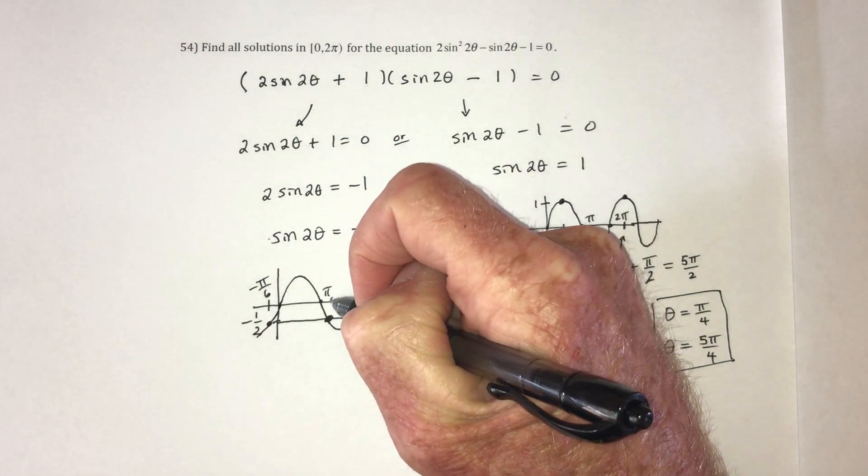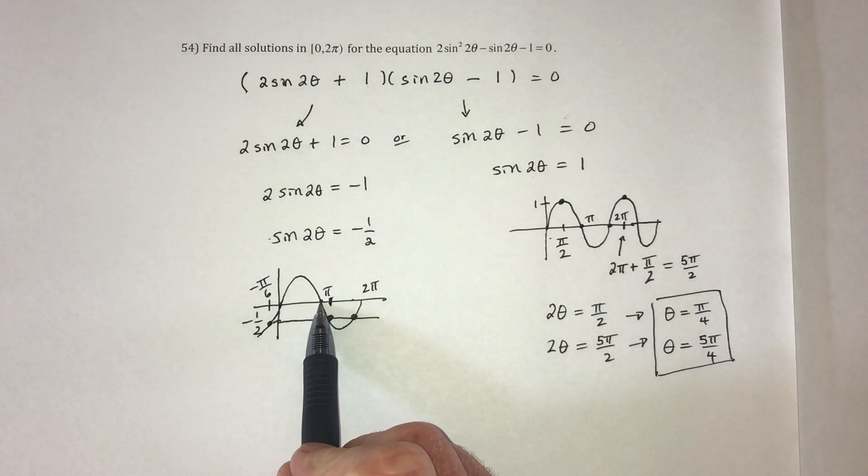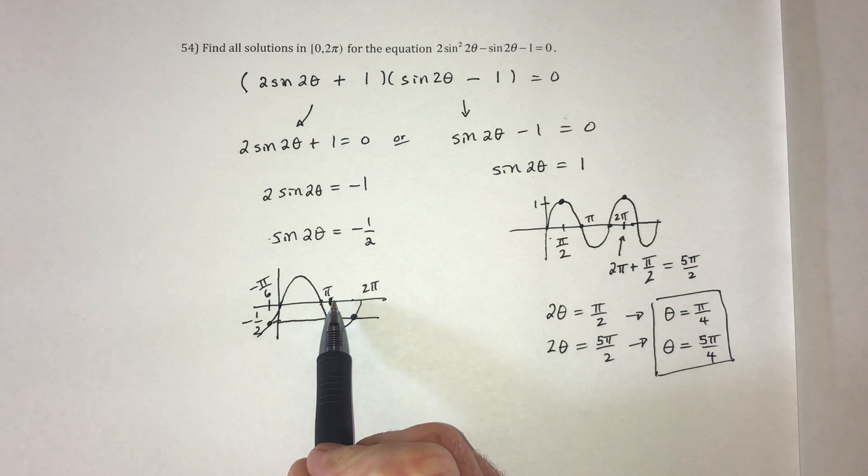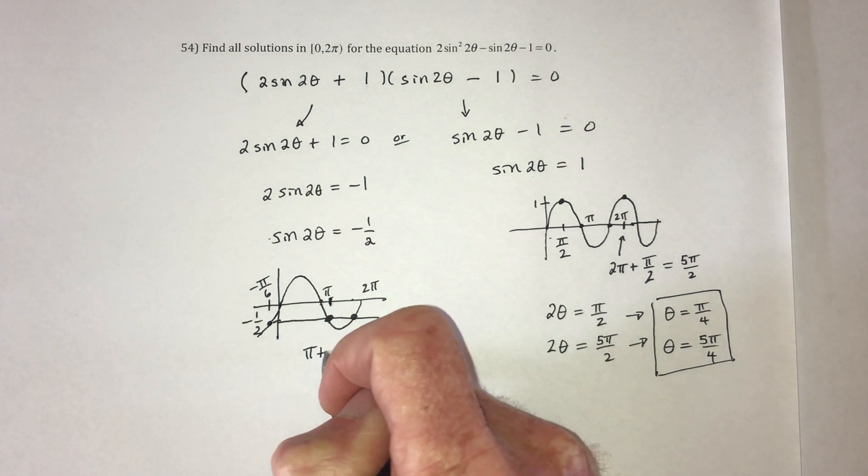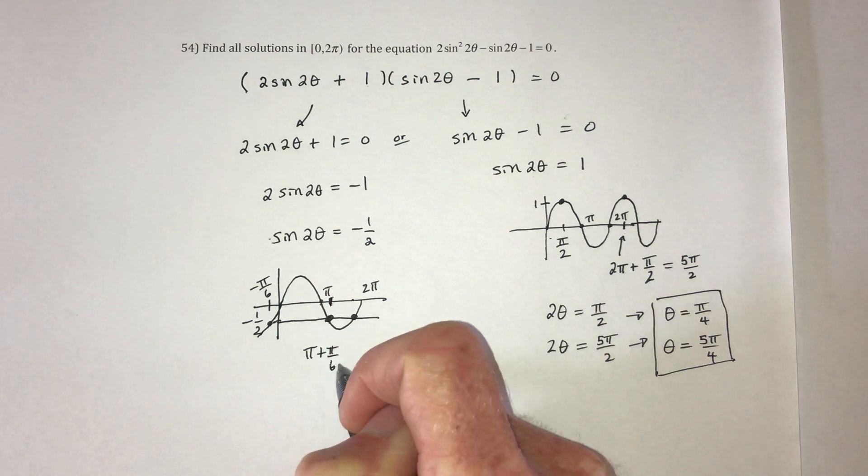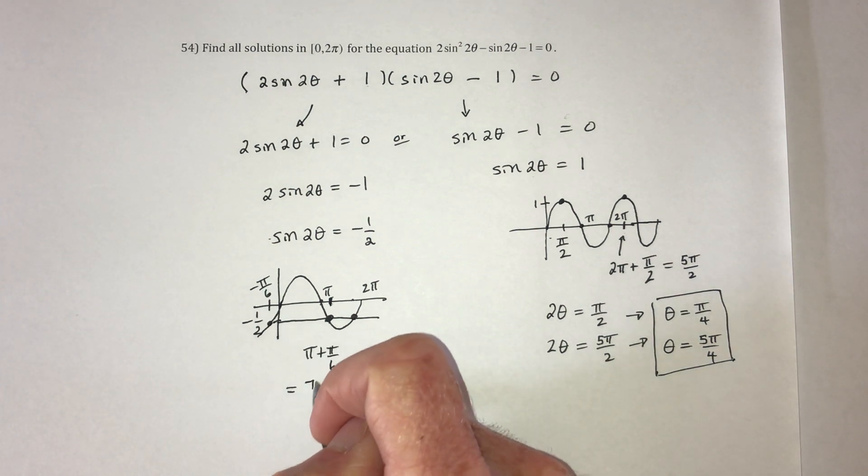So that just means that the gap between our solution right here and pi right here is a gap of pi over 6. So that means that this one is actually at pi plus pi over 6. When you get a common denominator, that would be 6 pi over 6 plus one more is 7 pi over 6.